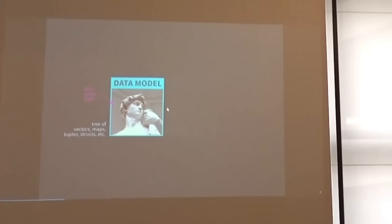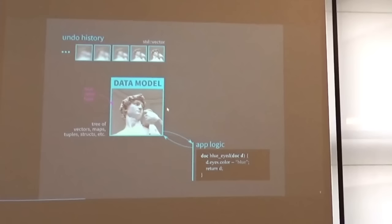Once our data model is a value type, we can write our application logic very simply, with pure functions that take in a document and return a new document. This function has no side effects and it's very easy to test. It's very often advertised that one of the big advantages of this is that when we want to do an undo history, we can just collect the previous states in a very simple data structure, like an STD vector. It's just a list of all the previous states of our application.